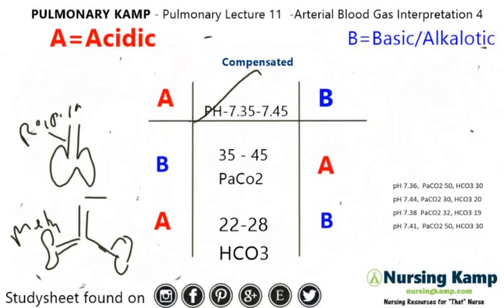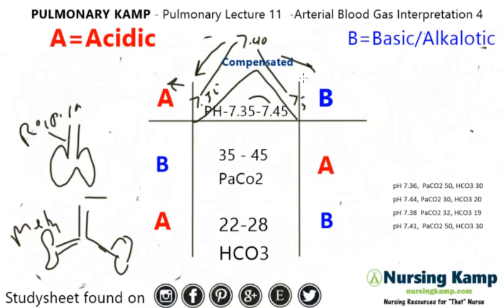pH is divided at 7.40 — that's in between 7.35 and 7.45. If the pH is closer to the 7.35 side, you're going to have acidosis. If it's closer to the 7.45 side, you're going to have alkalosis. That's a compensated blood gas. How do you know it's compensated? When the pH is in this middle box — not over on either side, but inside this box. If it's in this box, it's compensated. Period. The first rule of thumb is always look in this box, and if the pH is normal, we're talking about a compensated blood gas.